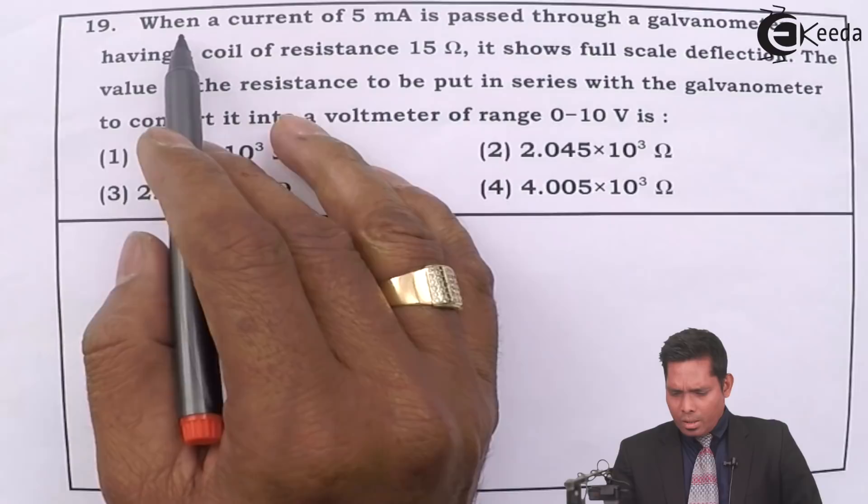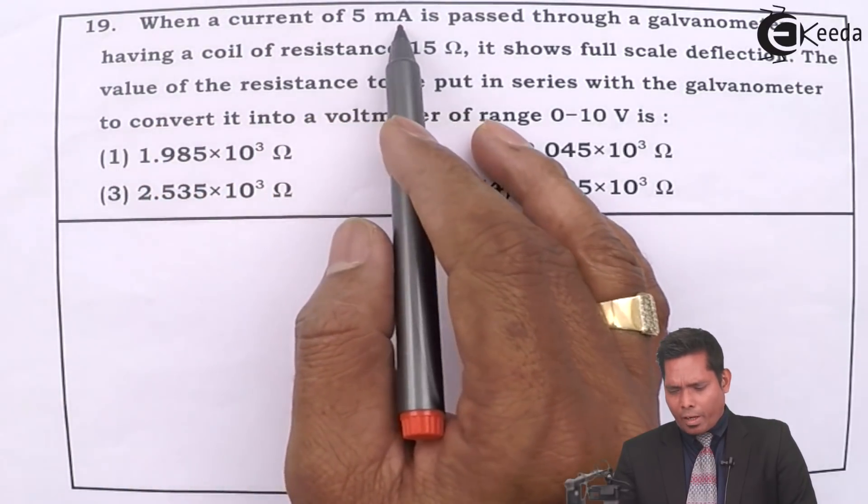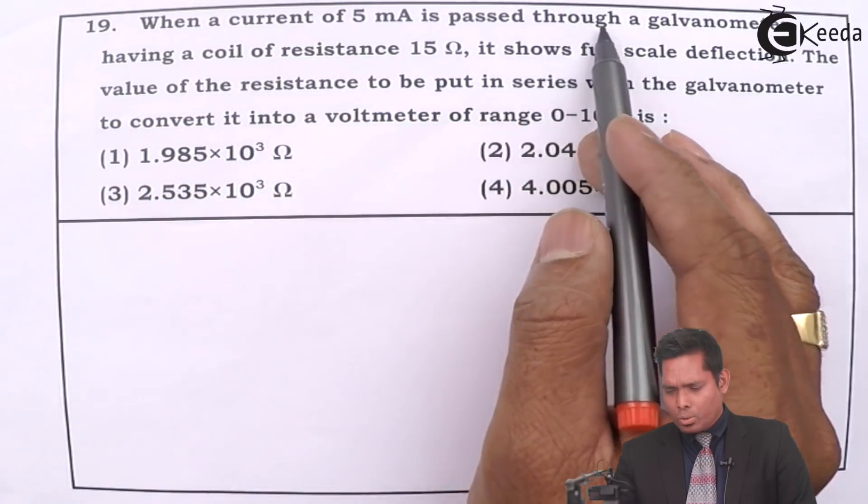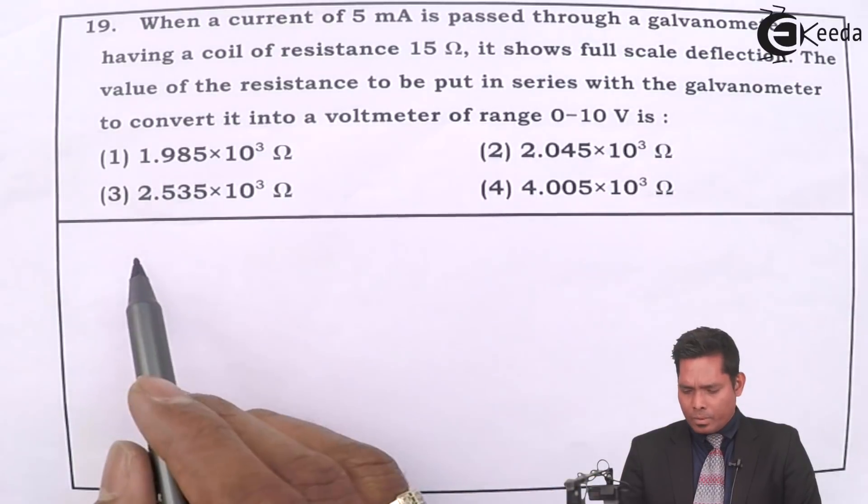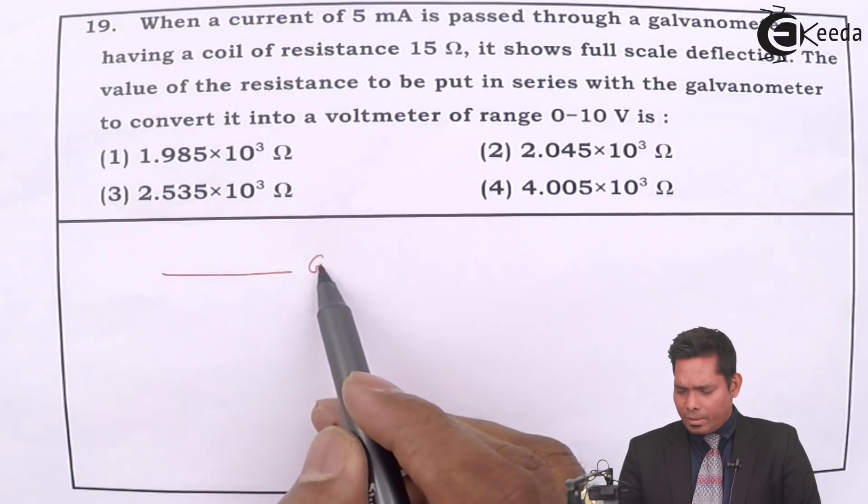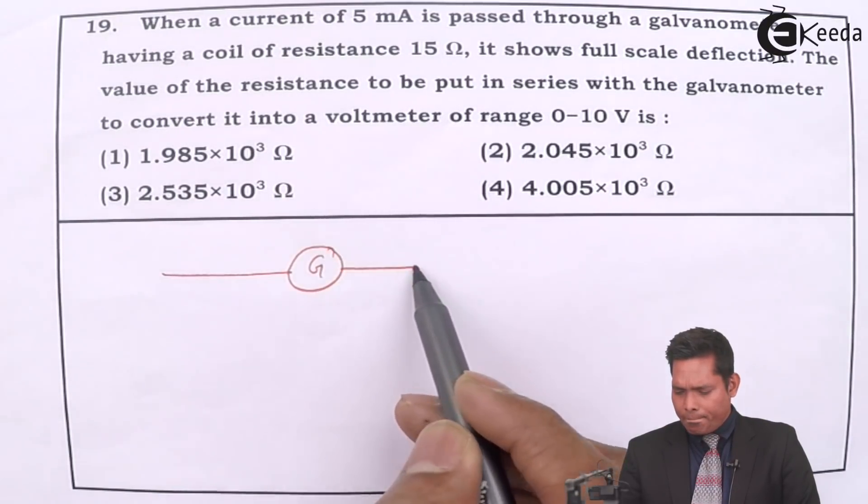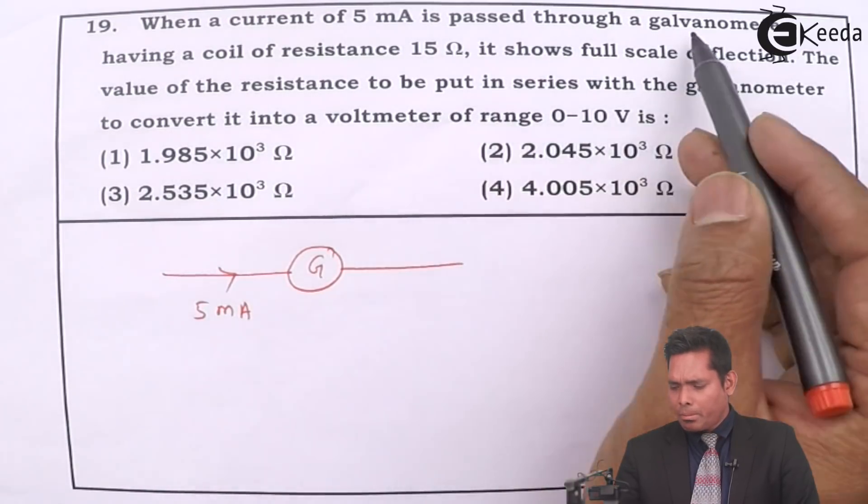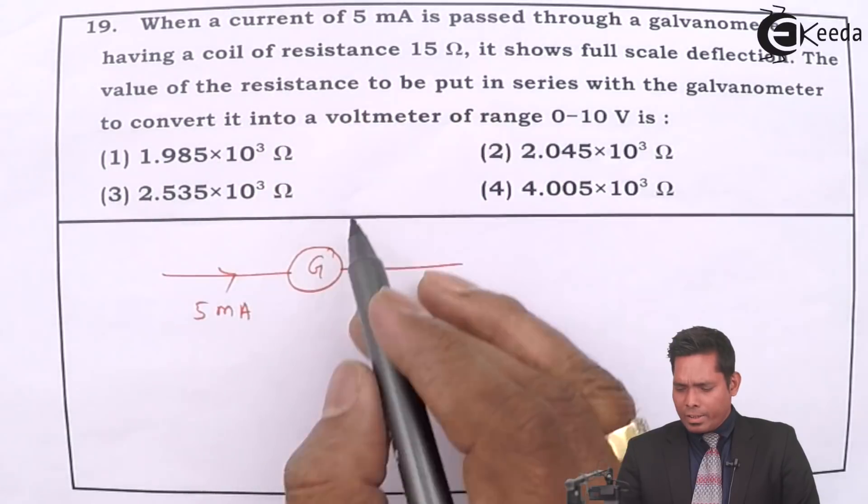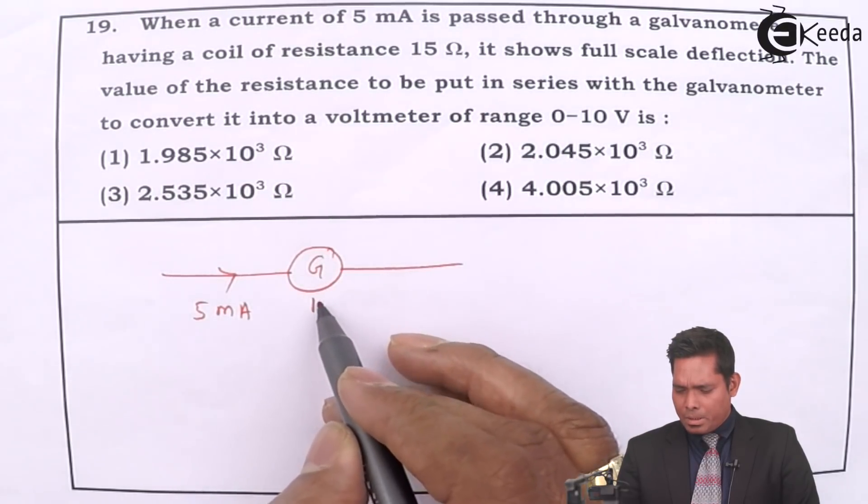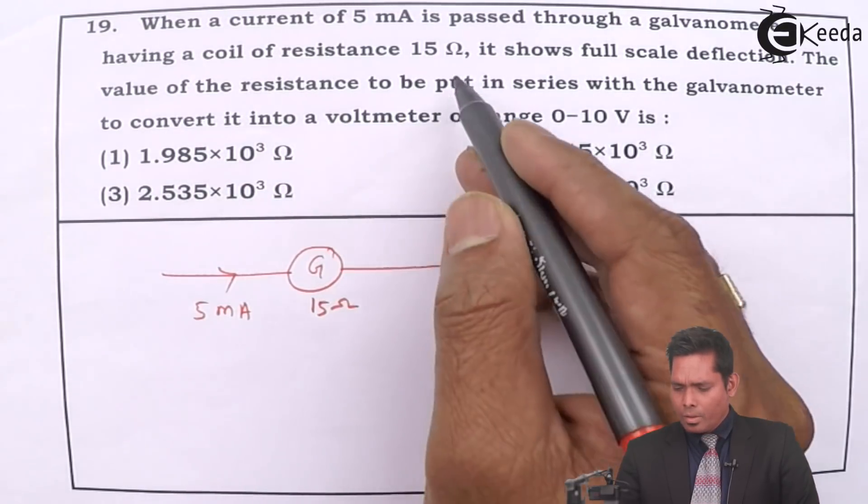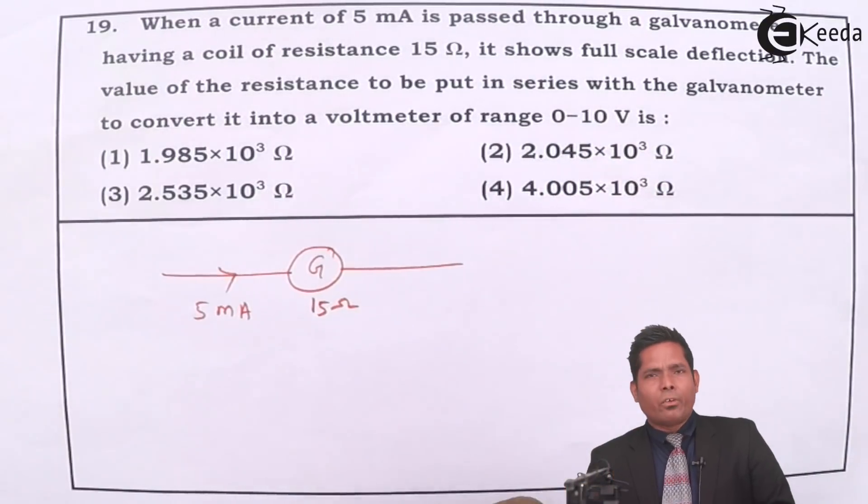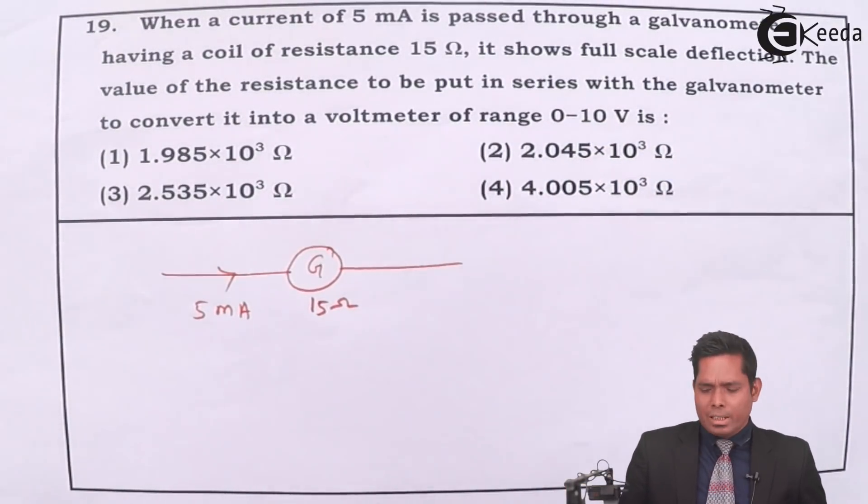This question says that when a current of 5 milliampere is passed through a galvanometer, there is a galvanometer. 5 milliampere current just passes through the galvanometer having a coil of resistance - the resistance of the galvanometer is 15 ohm. It shows full scale deflection.